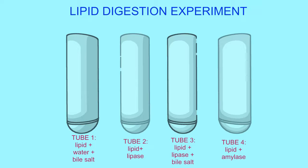To test various substances on how they can digest lipid, we add a lipid cream with a pH indicator, which is pink at an alkaline pH, to each of these four tubes.